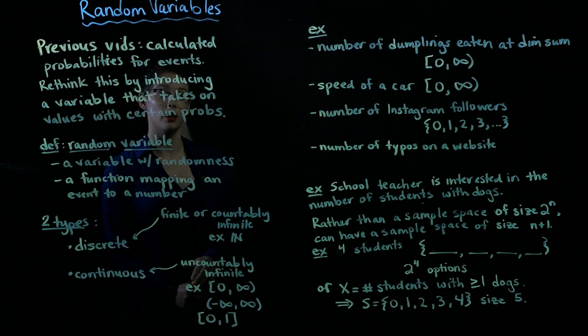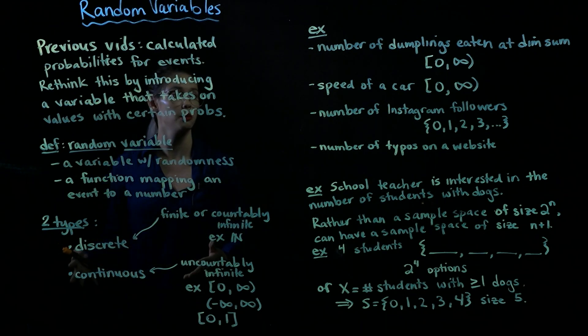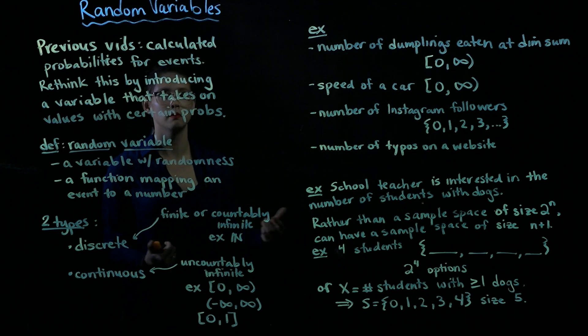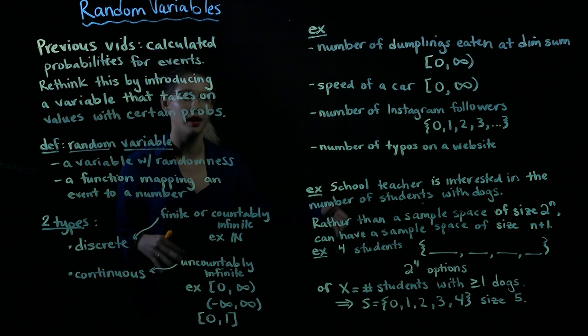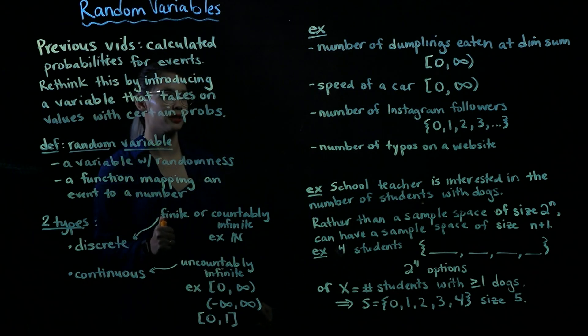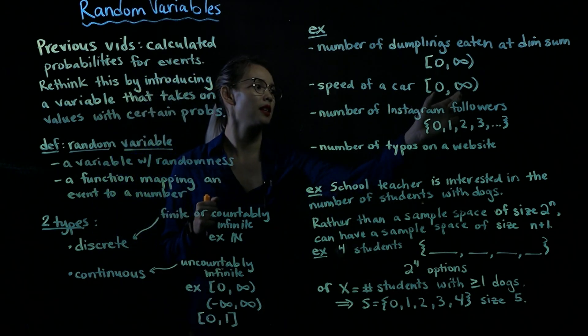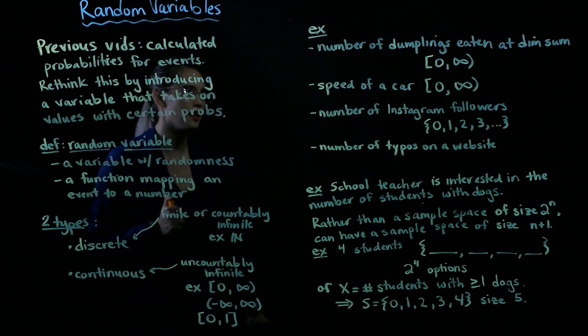Similarly, the speed of a car. We usually, in like normal people world, talk about the speed of a car in whole numbers. But of course, that's just rounding, right? So even though we may say the car is going 20 miles an hour, really it might be going 20.00729 blah, blah, blah, blah, blah miles per hour. So the speed of a car would be in this interval 0 to infinity.